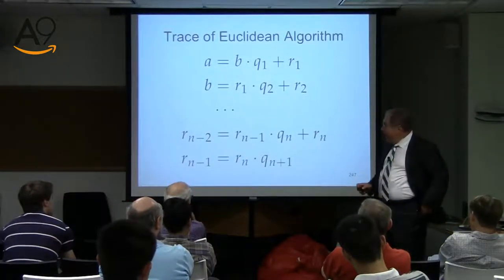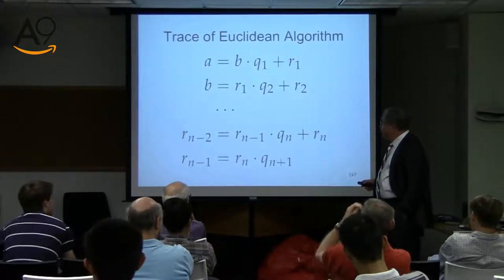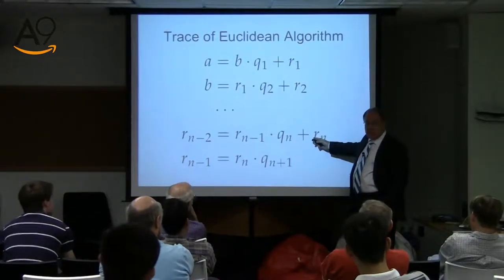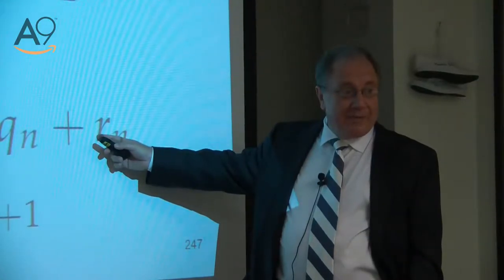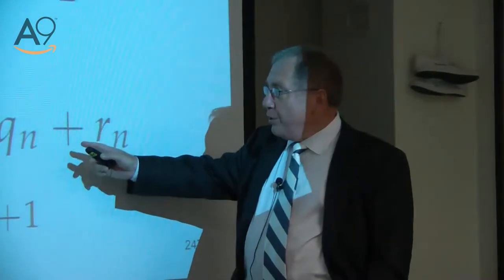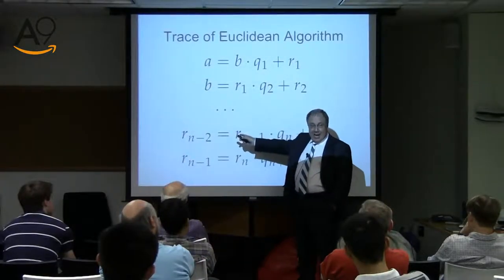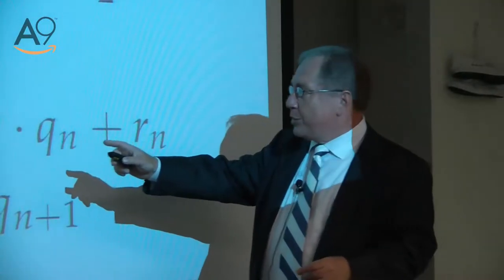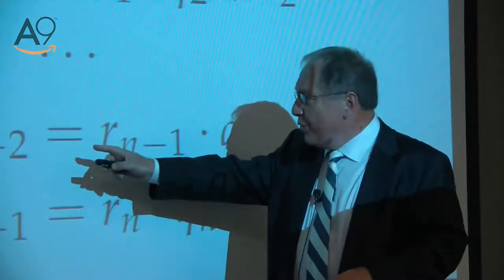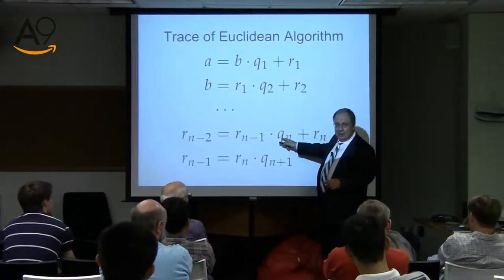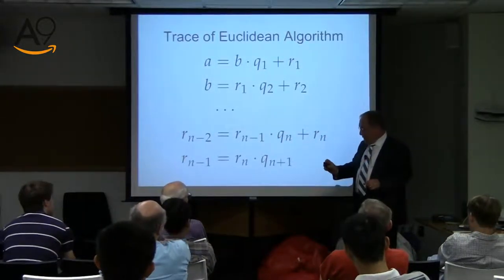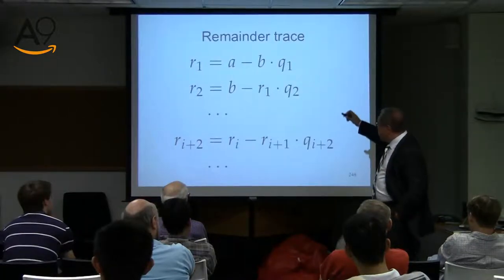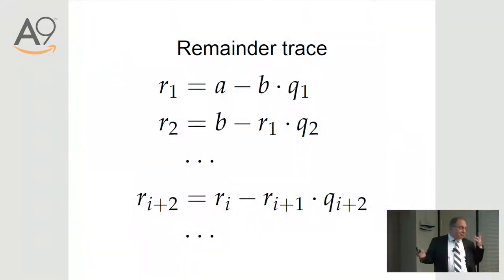We just write it out just like that. Then we say, why don't we rewrite it by looking at R's? There is this profound thing which you learned in the fifth grade: you could move this guy to the left with the negative sign, and then flip them, so Rn equals Rn minus 2 minus Rn minus 1 times Q sub n. I'm going to write it so we could all look at it. It's a very, very important thing. We're actually done — except the rest is trivial.